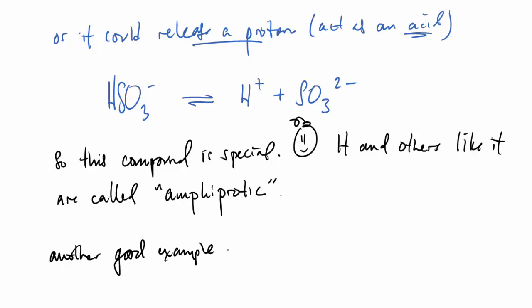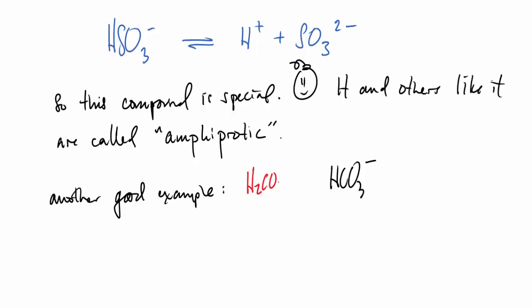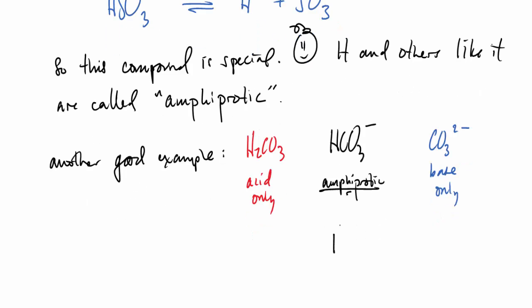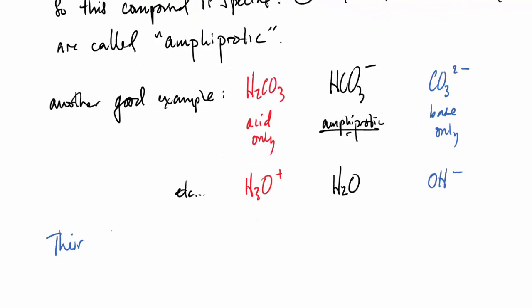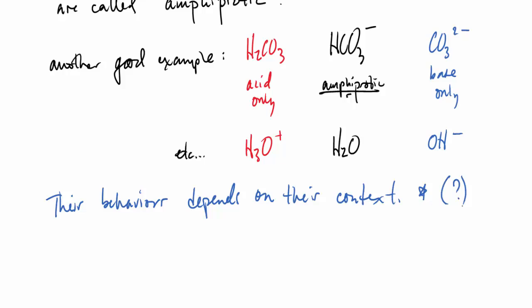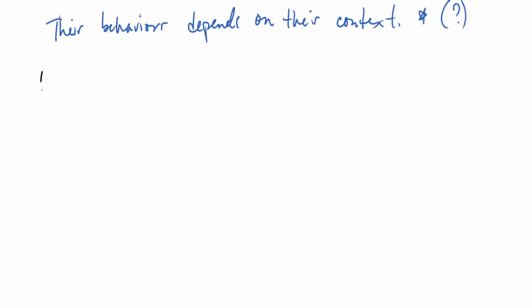Here's another good example. This is the bicarbonate ion and you can see there's a couple different forms. It can gain a proton and become carbonic acid or lose a proton and become the carbonate ion. Another good example of this is water. It can lose a proton, become hydroxide, gain a proton, become hydronium. So this behavior of these things, which we're going to call amphiprotic compounds, depend on context. And we'll talk more about them in due course.